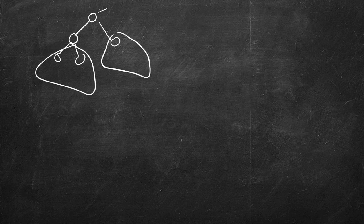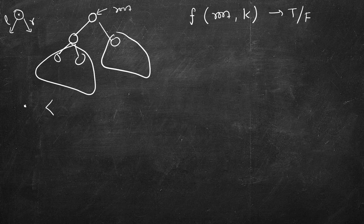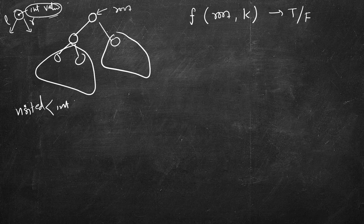So let's look at a single-traversal approach. We have a function f that takes the root and the target k and returns a boolean. We keep track of visited nodes — whatever node we visit, we store its value in an unordered set (hash set) called 'visited', which holds integers.